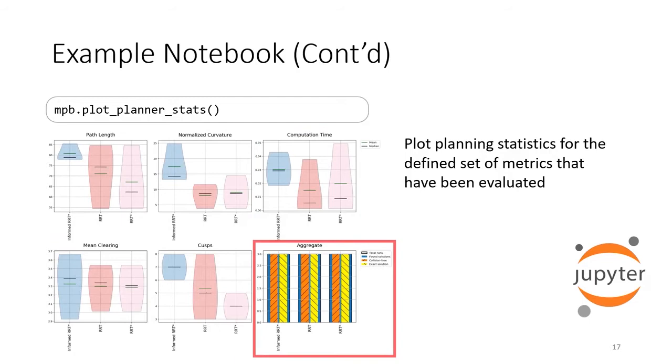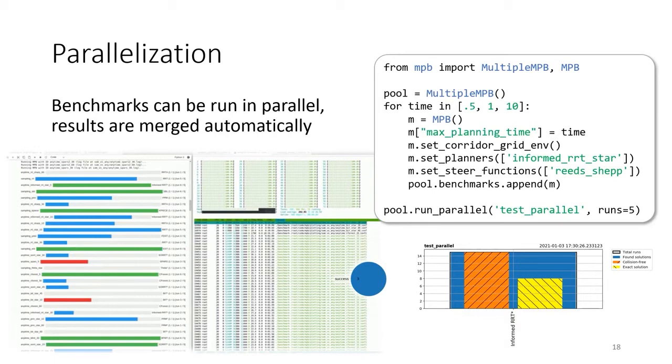BenchMR supports parallelized benchmarking out of the box. By instantiating a multiple MPB instance and adding MPB instances, such as the one you have seen before, benchmarks will be automatically executed in parallel.